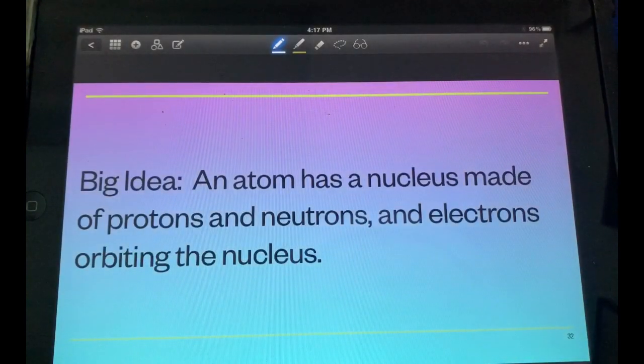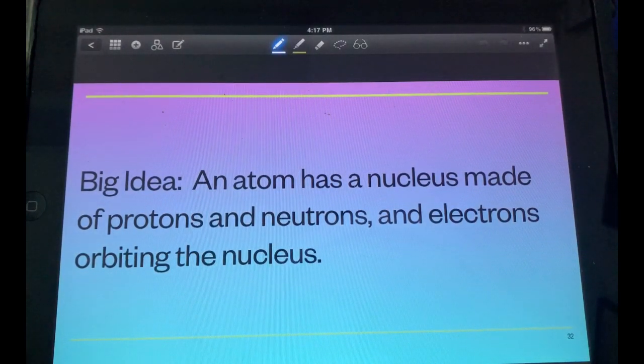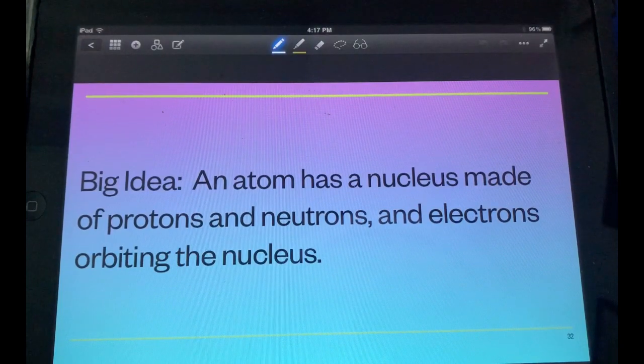The big idea. An atom has a nucleus made of protons and neutrons and electrons orbiting the nucleus. That's what we're taking away from this.